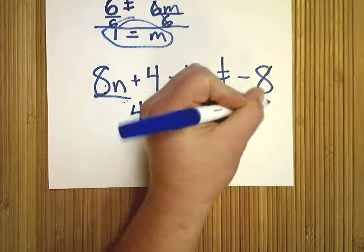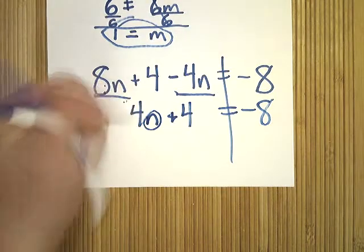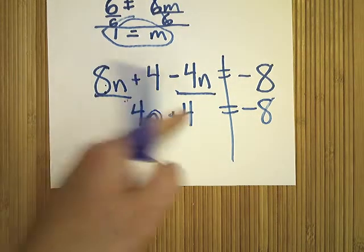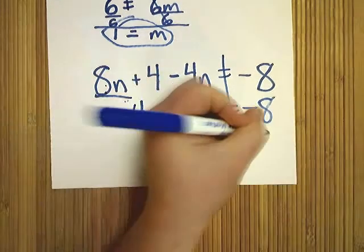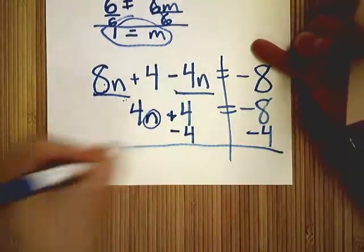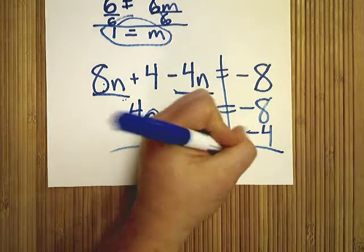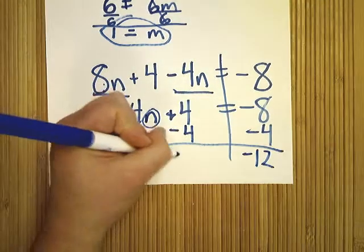Now we're at party's over. Here I am. My friend is right next to me. Here's the friend of friend. We've got to get rid of plus 4. Negative 8 minus 4 is negative 12. And bring down my 4n.